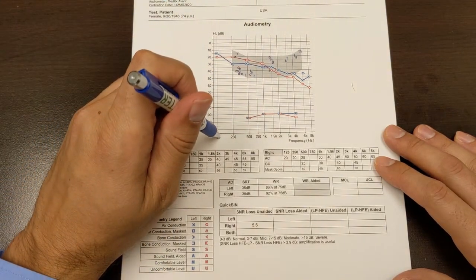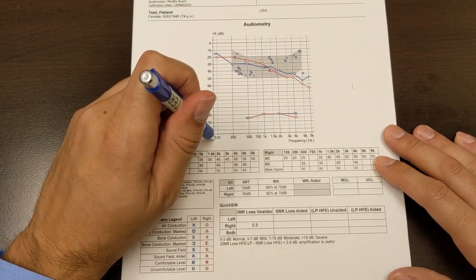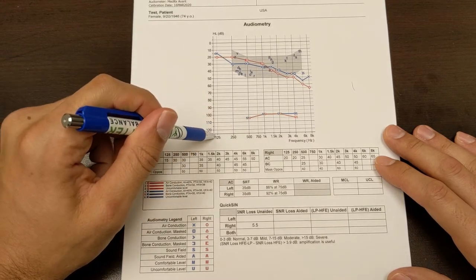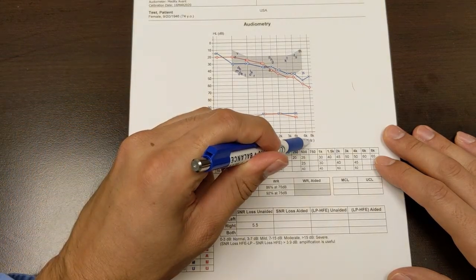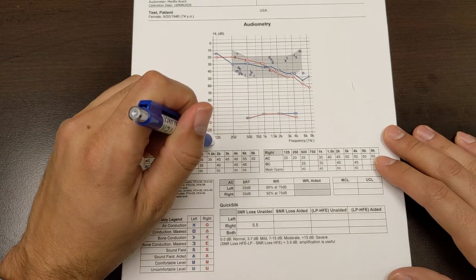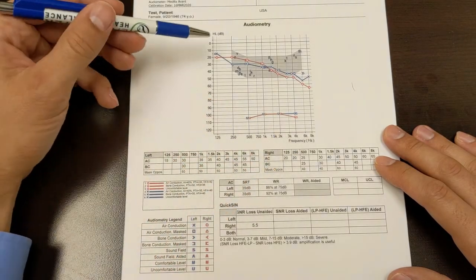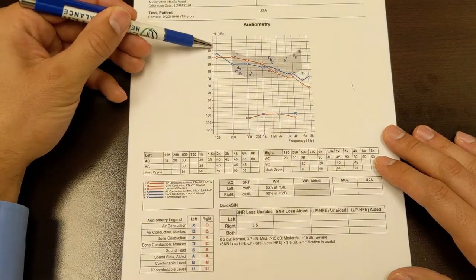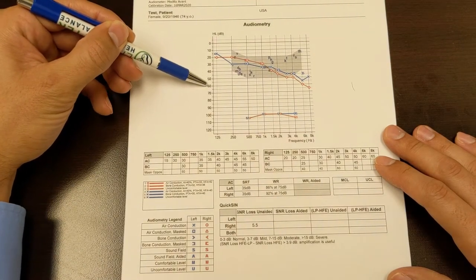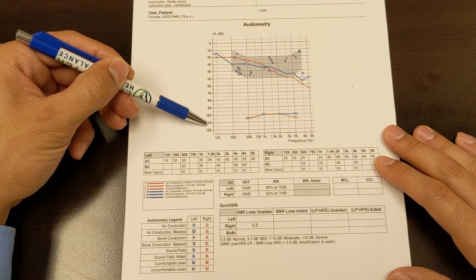Frequencies are almost like notes that range from low pitch on this graph to high pitch. So 125 hertz is very low pitch and 8000 hertz is high pitch. So the louder the sound had to be for you to be able to hear it, the lower on the chart your responses.